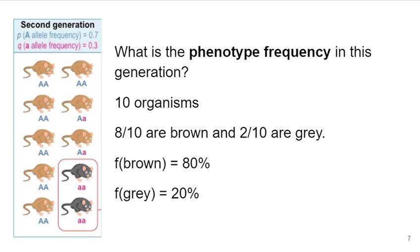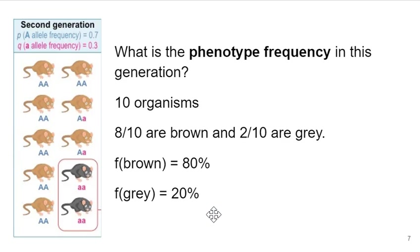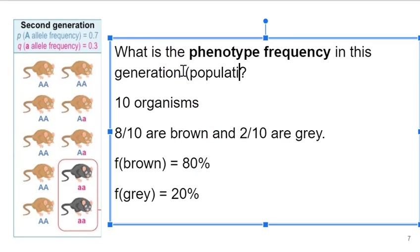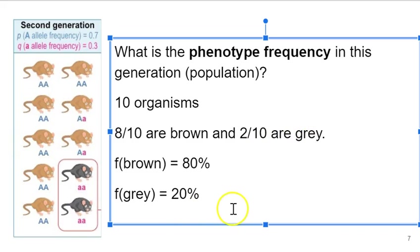Let's look at a snapshot of a population of 10 mice. They're brown or they're black — that's the phenotype we're interested in. Just look at the colors of the mice and ask: what's the phenotype frequency in this population? We have 10 mice, and 8 out of 10 are brown and 2 out of 10 are gray or black. So the frequency of browns is 80% and the frequency of grays is 20%. Look, score, count, calculate frequency.